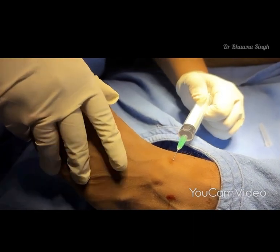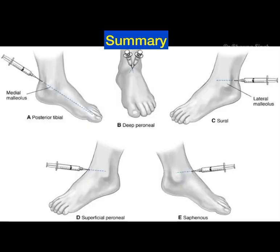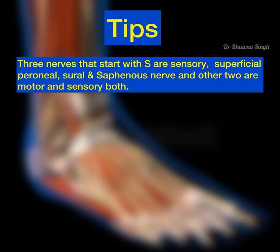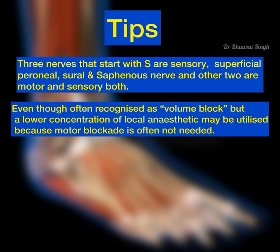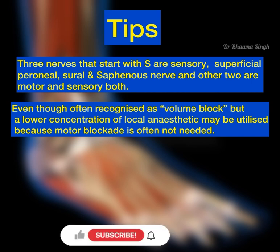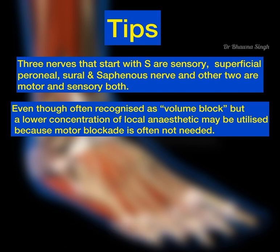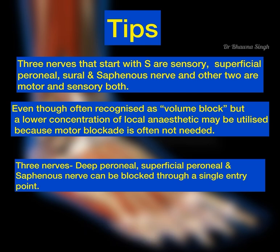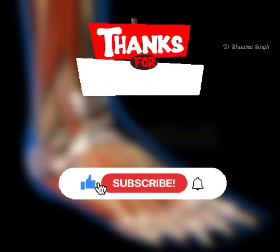Some tips: out of the five nerves, superficial peroneal, sural, and saphenous are sensory only. Although it is a volume block, a lower concentration of local anesthetic can be utilized because motor block is often not needed. The deep peroneal, superficial peroneal, and saphenous nerves can be blocked through a single entry point. Please like, share, and subscribe for more videos.